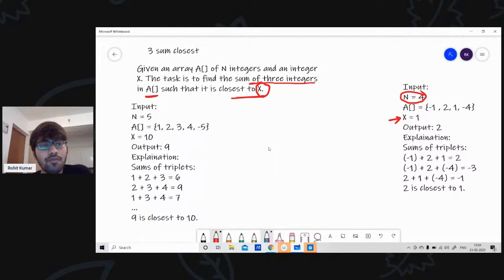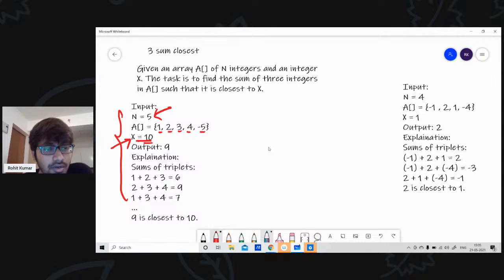If we are able to get the exact sum, that's very great. If we are not able to get the exact triplet sum equal to x, then we at least need closest to it. So I hope the question is clear to everyone. This is a very simple description of the question. If anyone has any doubts, do let me know in the comments.